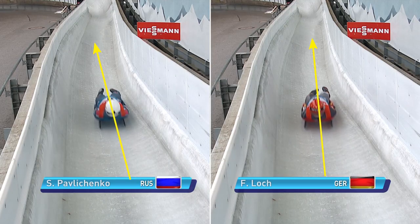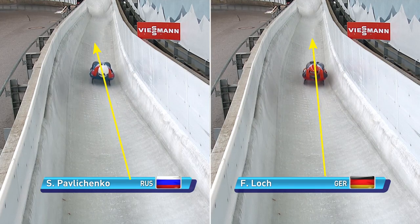Here we have a comparison between Felix Lough on the right side and Simon Pavlichenko on the left side. You can see that Felix is cutting the second part of the lower labyrinth in Koenigsee way more than Simon on the left side. That means he has less distance to drive, which is a faster way.